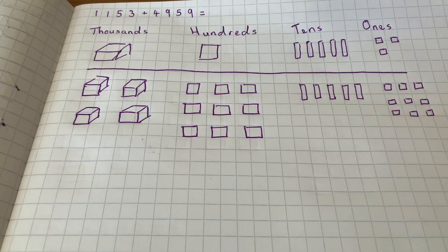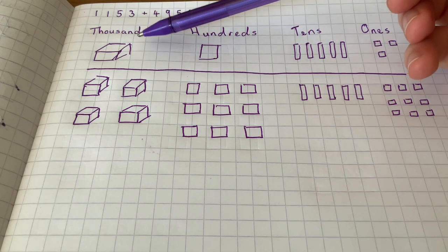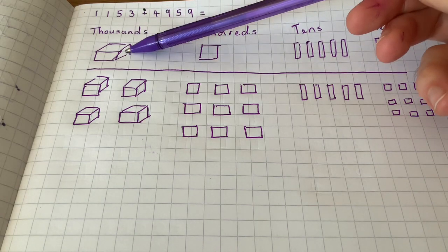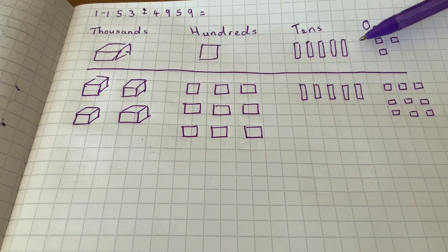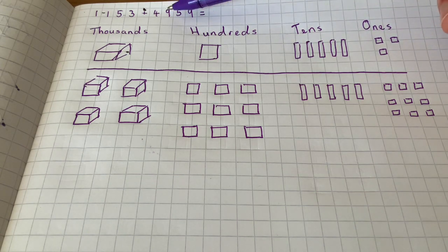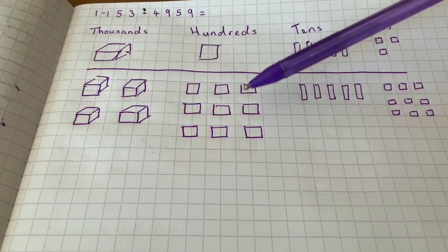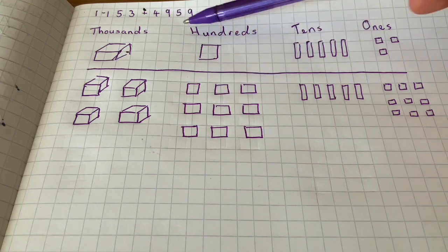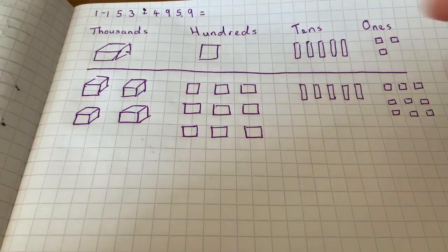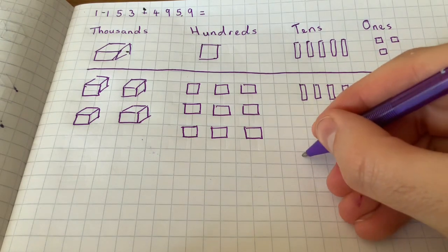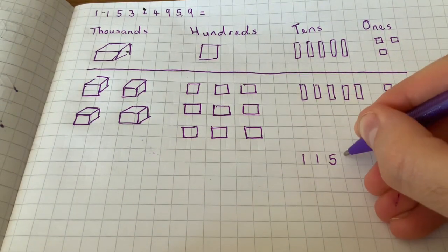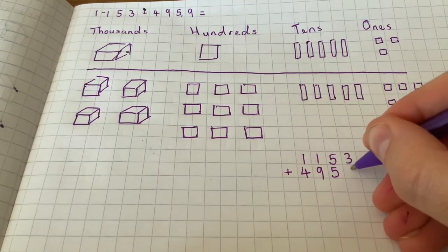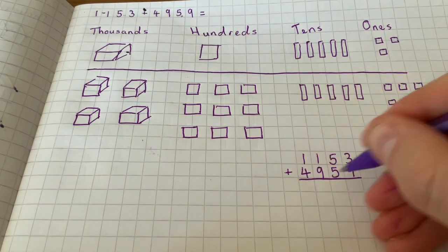So we're going to look at this question now. You can see I've got my thousands, hundreds, tens, and ones columns here. So I've got my first number, one thousand one hundred and fifty-three, and then we've got four thousand nine hundred and fifty-nine. So I'll set it out as I have done before. So that's one thousand one hundred and fifty-three add four thousand nine hundred and fifty-nine, there. Draw my lines again there.